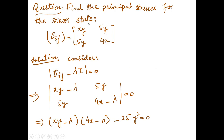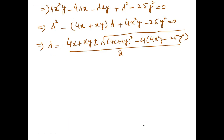The next question: find the principal stresses for this stress state. Principal stresses are found as eigenvalues of the stress matrix using the characteristic equation: determinant of (sigma_ij minus lambda * I) equals 0. Expanding the determinant: (xy minus lambda)(4x minus lambda) minus 25y squared equals 0. This gives a quadratic in lambda: lambda squared minus (4x + xy)lambda plus (4x squared y minus 25y squared) equals 0. Solving with the quadratic formula gives the two principal stress values.